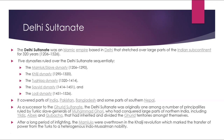As a successor of the Ghurid Sultanate, the Delhi Sultanate was originally one among a number of principalities ruled by the Turkish slave generals of Muhammad Ghori, who had conquered large parts of northern India. Generals including Aibak and Qubacha had inherited and divided the Ghurid territories among themselves. After a long period of infighting, the Mamluks were overthrown in the Khilji revolution, which marked the transfer of power from the Turks to a heterogeneous Indo-Muslim nobility.